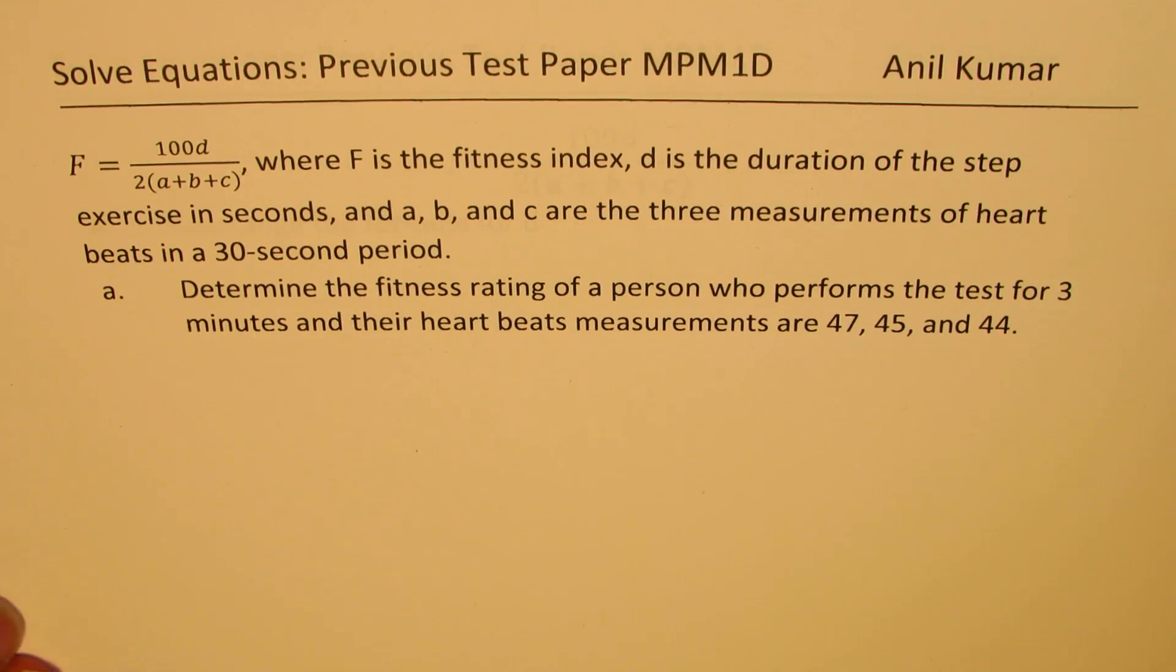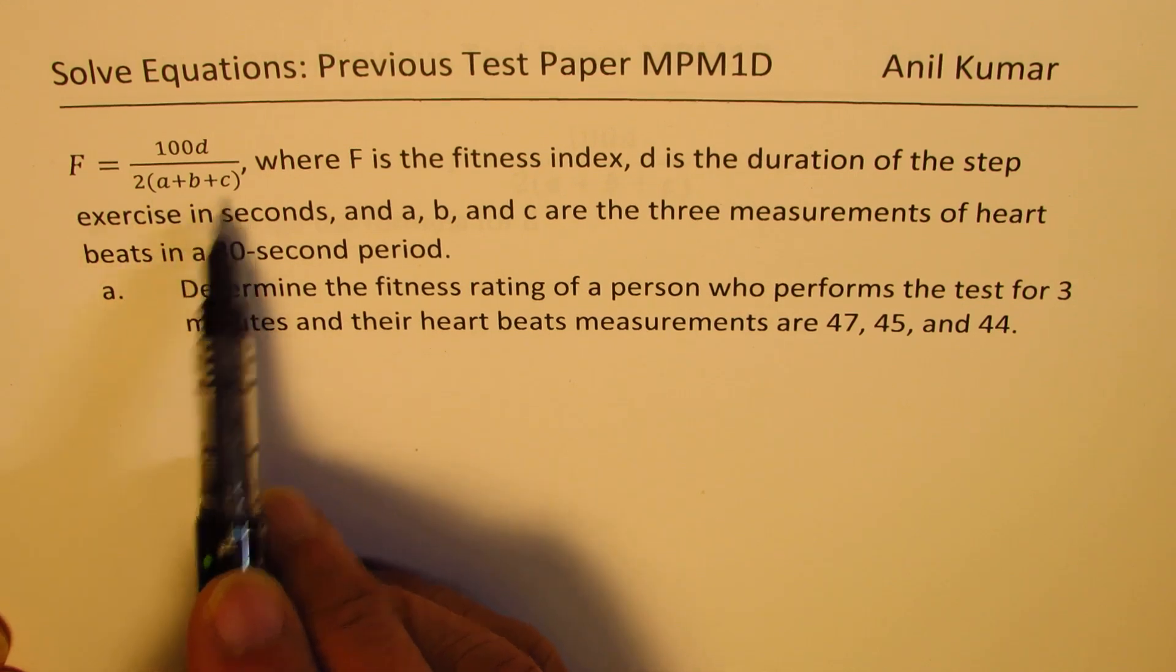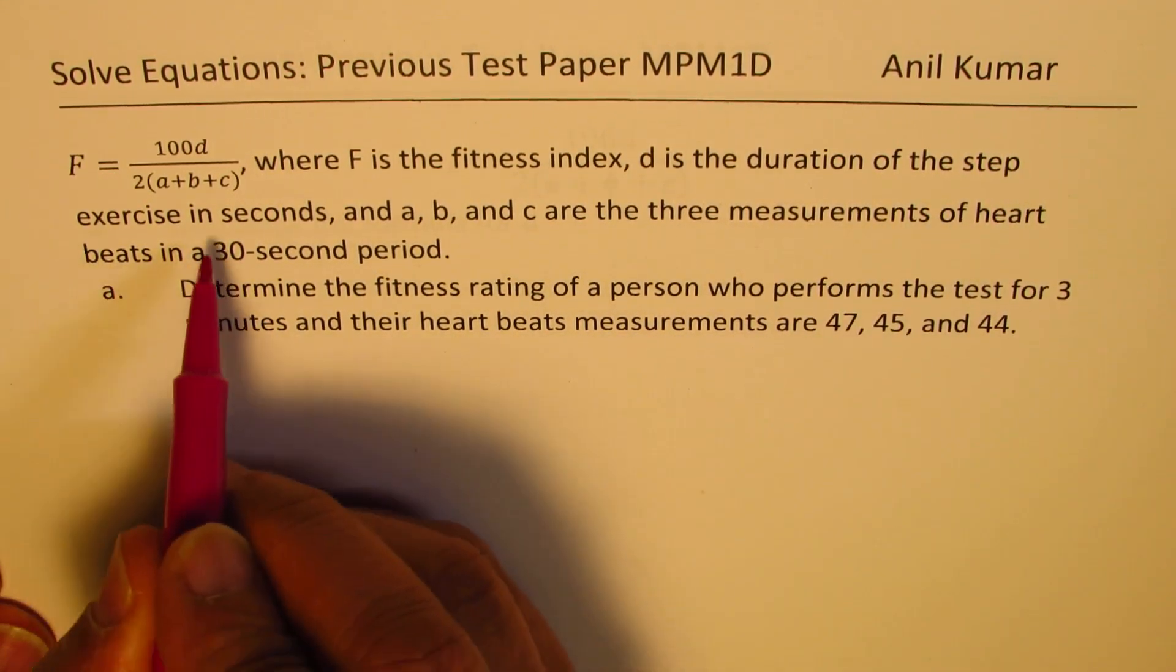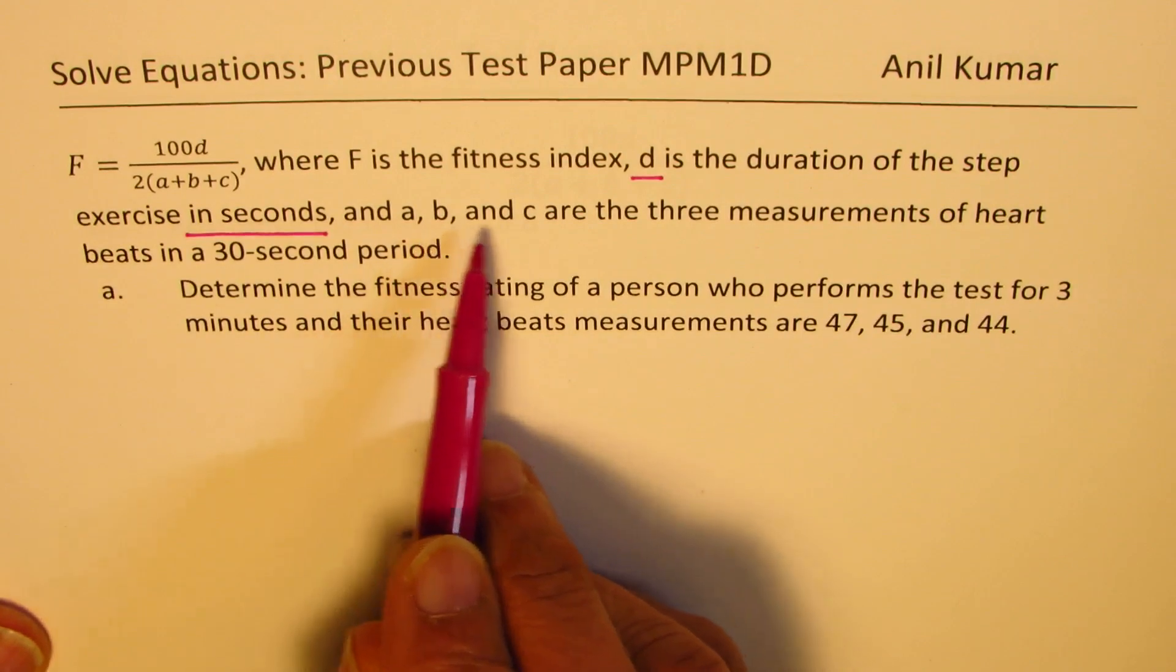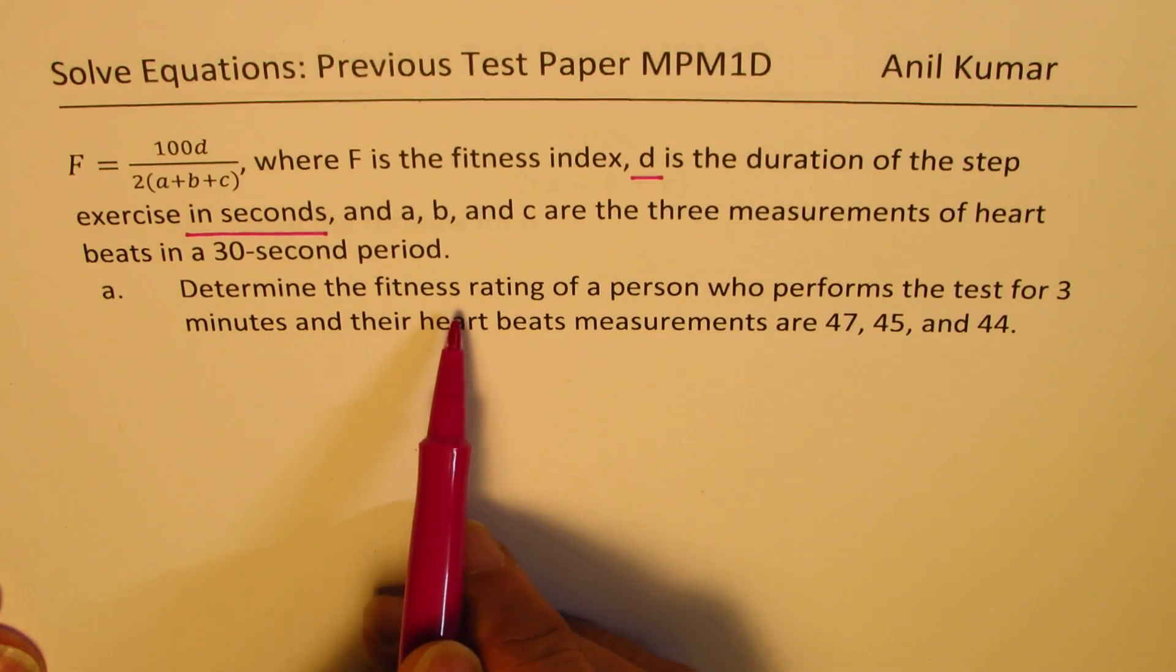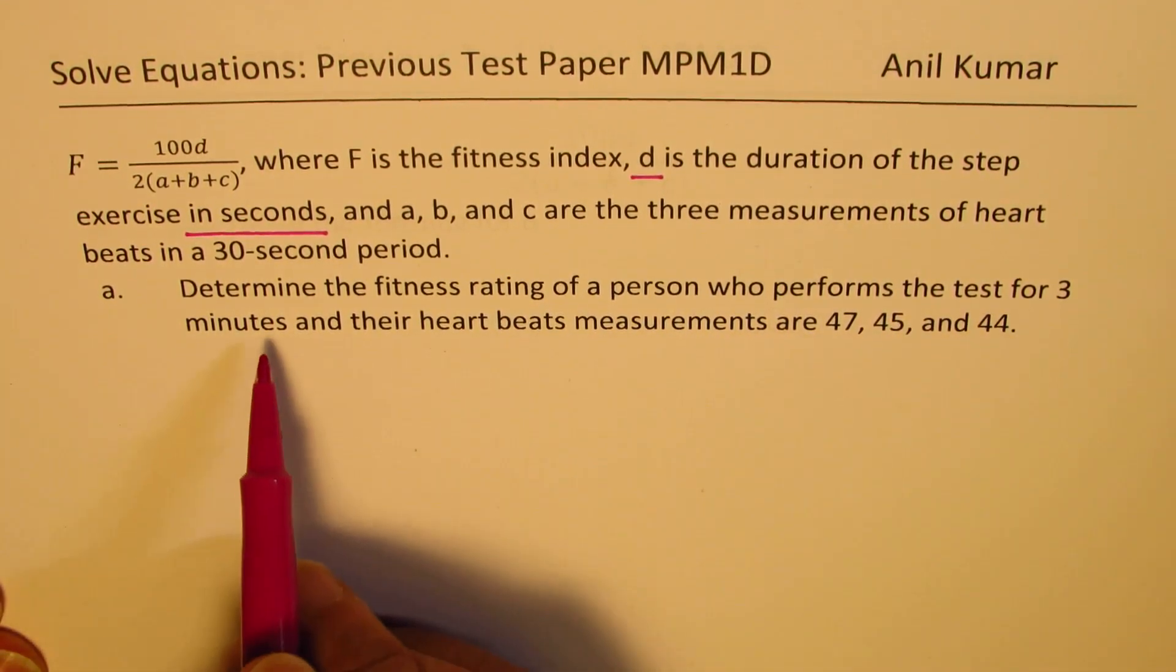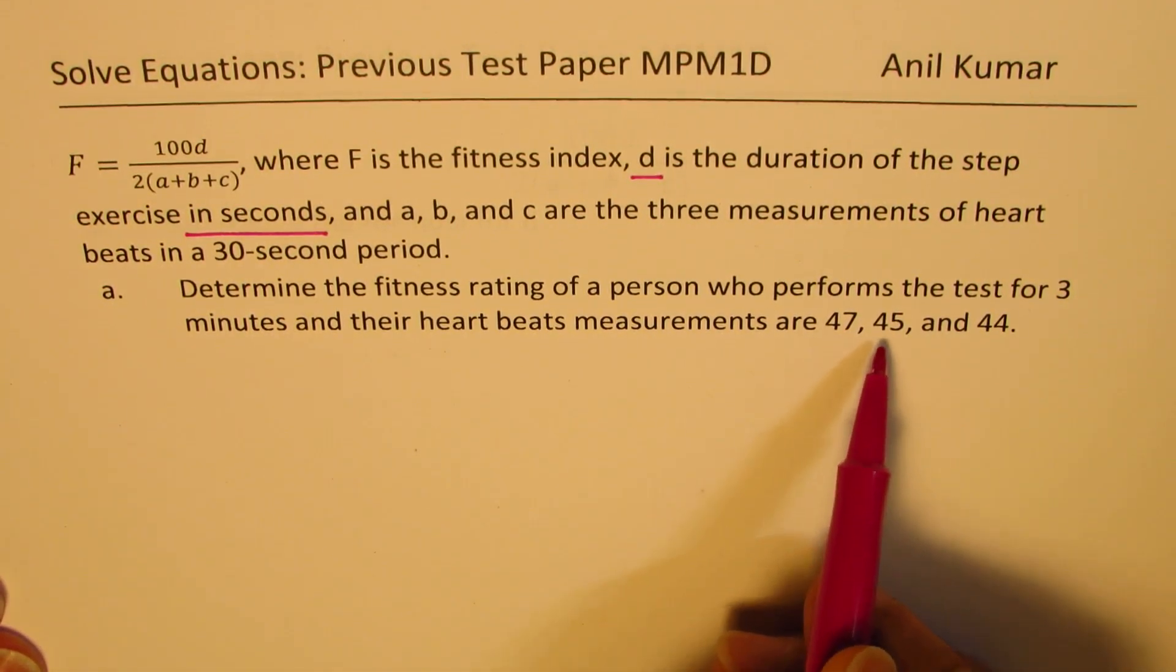So we are basically given a formula for fitness F equals 100D over 2 times (A plus B plus C) where F is the fitness index. D is duration of the step exercise in seconds. A, B and C are the three measurements of the heartbeats in 30 second period. So part A was determine the fitness rating, that is F, of a person who performs the test for three minutes and their heartbeat measurements are 47, 45 and 44.